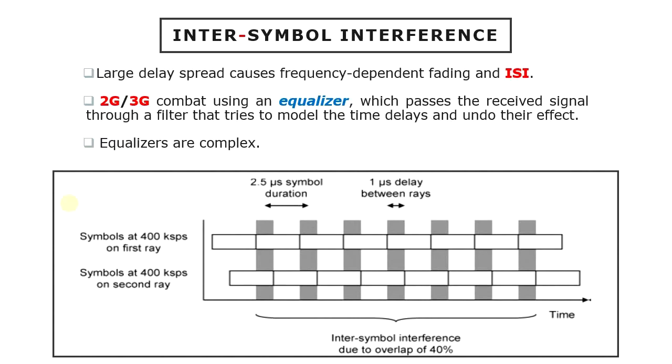We have seen that frequency-dependent fading and inter-symbol interference are both important if the delay spread is large. In fact, there are different ways of looking at the same underlying phenomenon. A large delay spread causes both frequency-dependent fading and ISI.